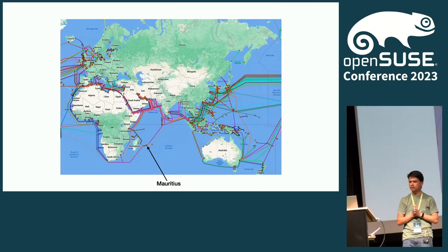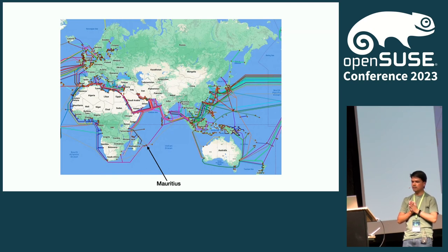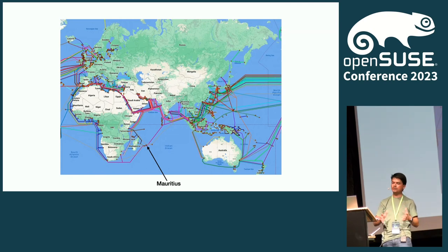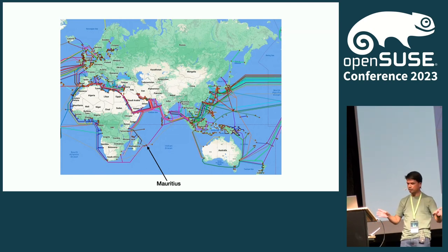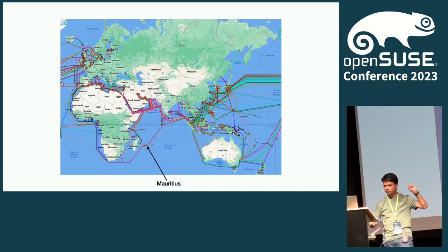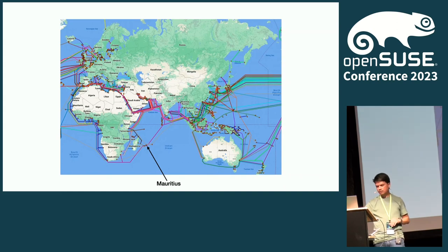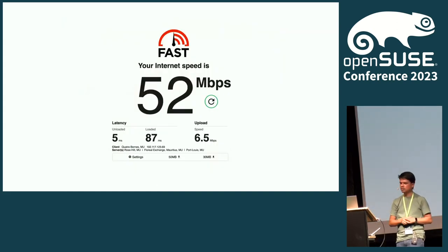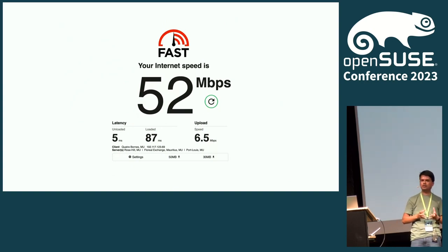You see the dot in the Indian Ocean — that's where Mauritius is. If you want to see how we are connected to the rest of the world, we have three submarine cables that connect us, whether it is Africa, Asia, Europe, or the Americas. Three submarine cables means we have a pretty decent internet connection.